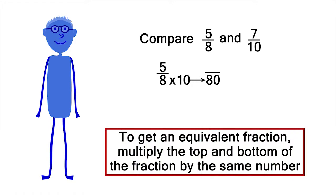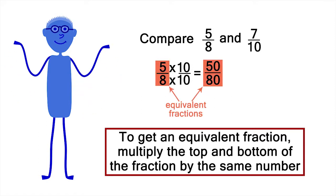To make an equivalent fraction, whatever you multiply the bottom half of a fraction by, you also have to multiply the top half of the fraction by. 5 times 10 is 50. So 5 eighths and 50 eightieths are equivalent fractions.